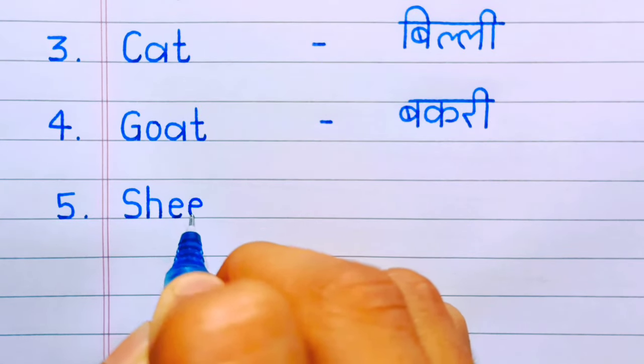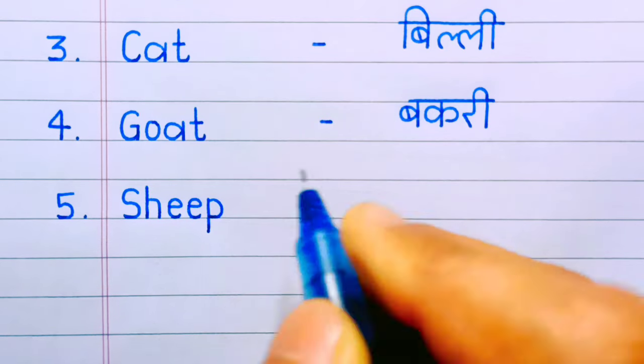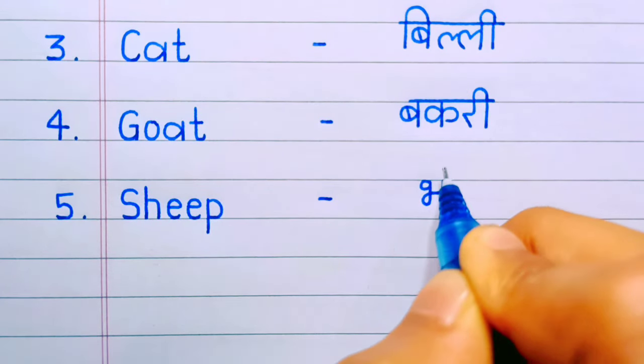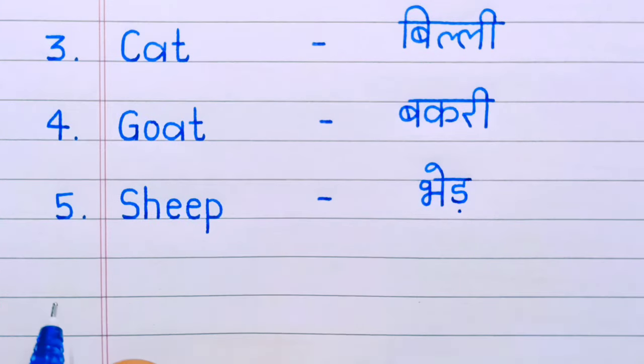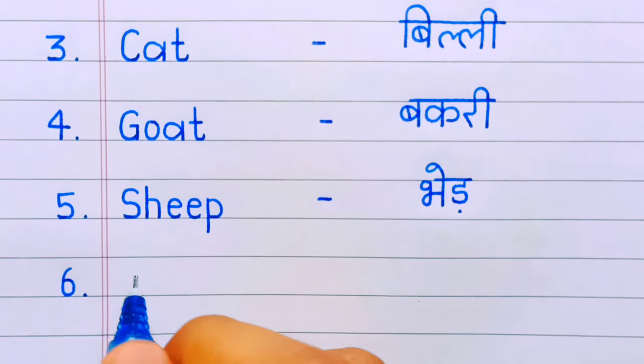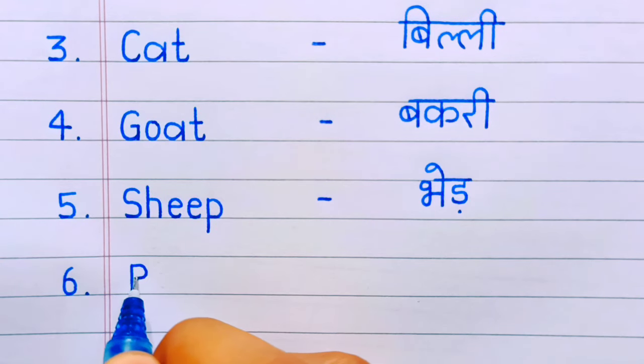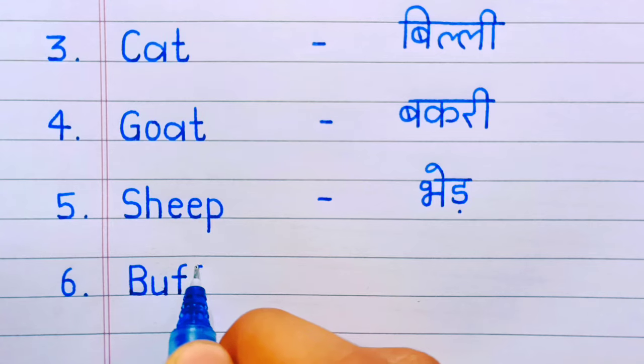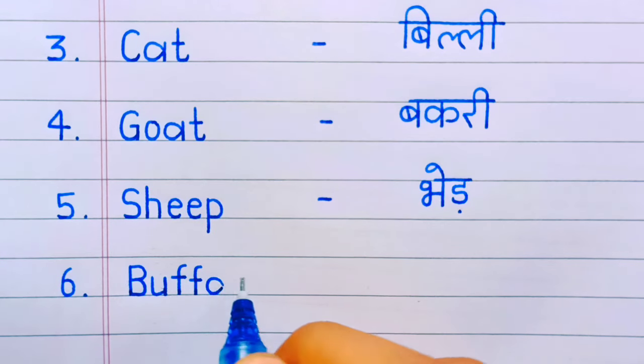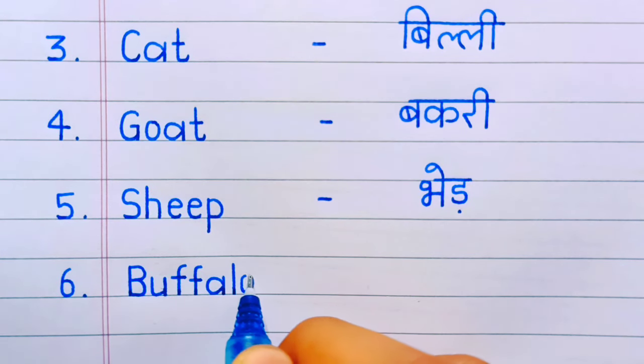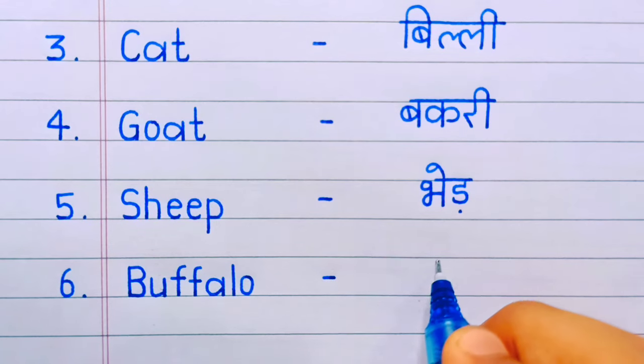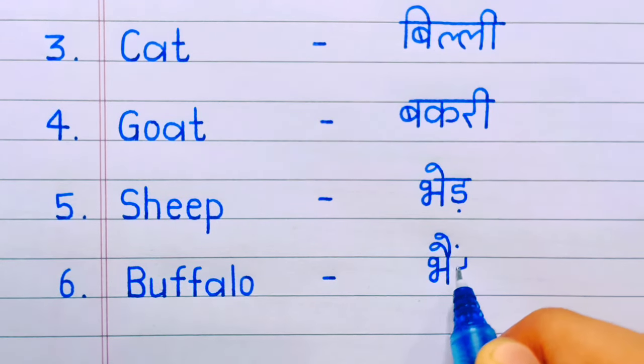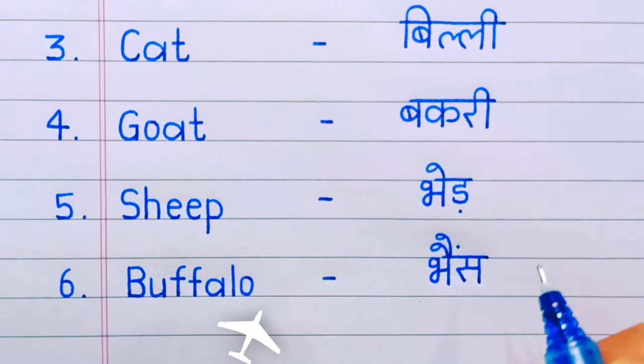Number five: sheep. Sheep means bhed. Number six: buffalo. Buffalo means bhains.